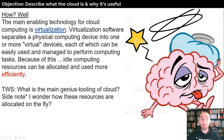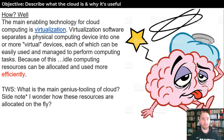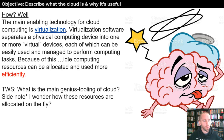Virtualization software separates a physical computing device into one or more virtual devices. So one physical computer can actually behave as if it's ten other computers. When you put that in perspective of a giant network, this is a really good thing — because idle computing resources can be allocated and used more efficiently.